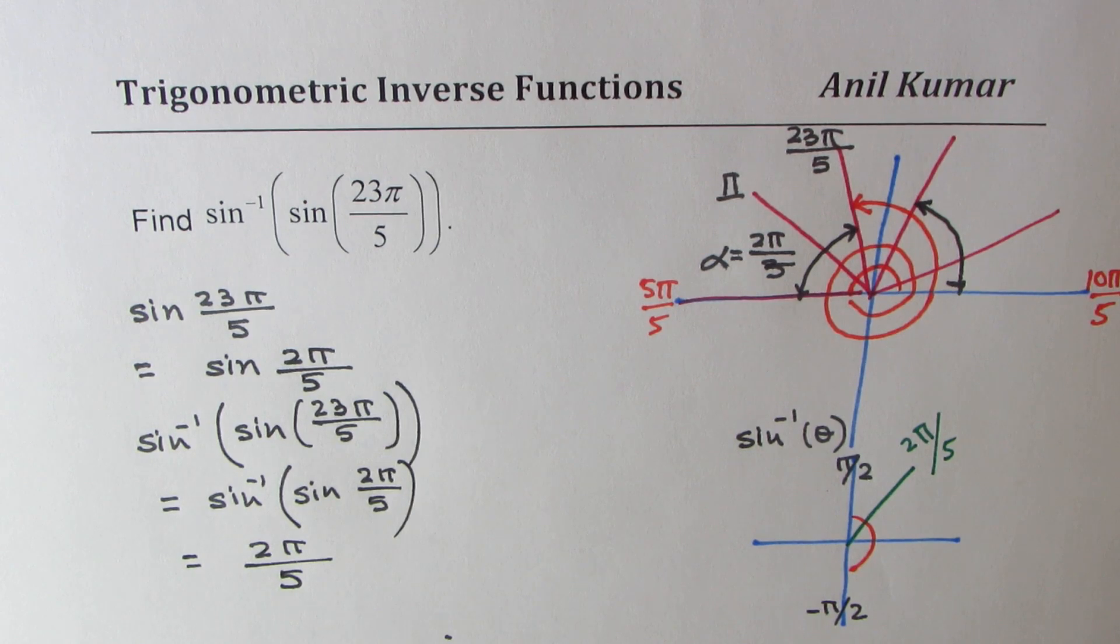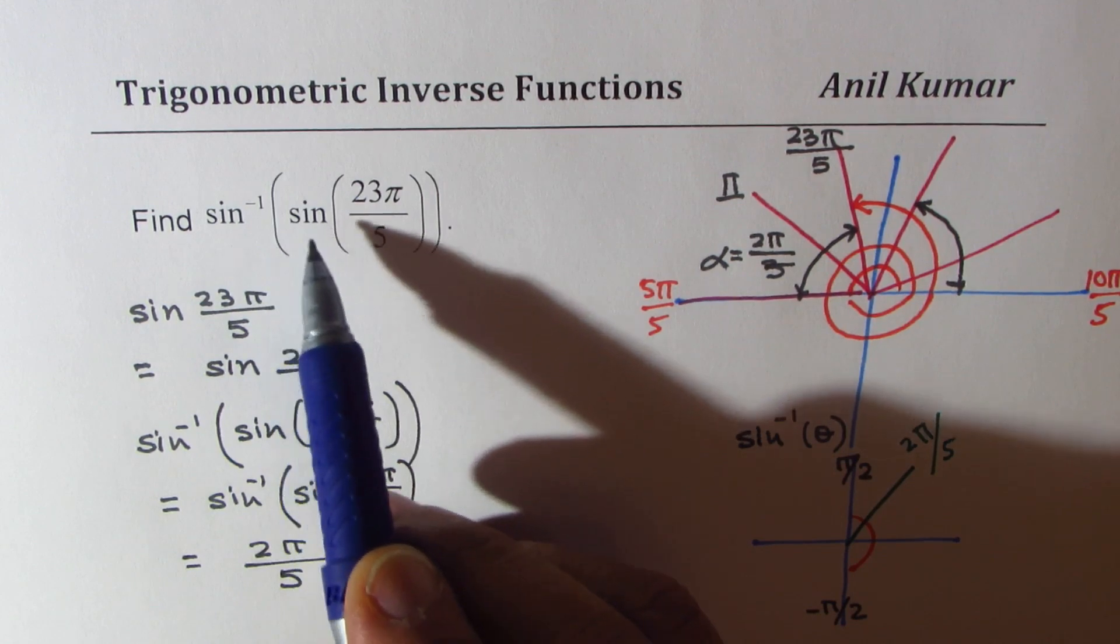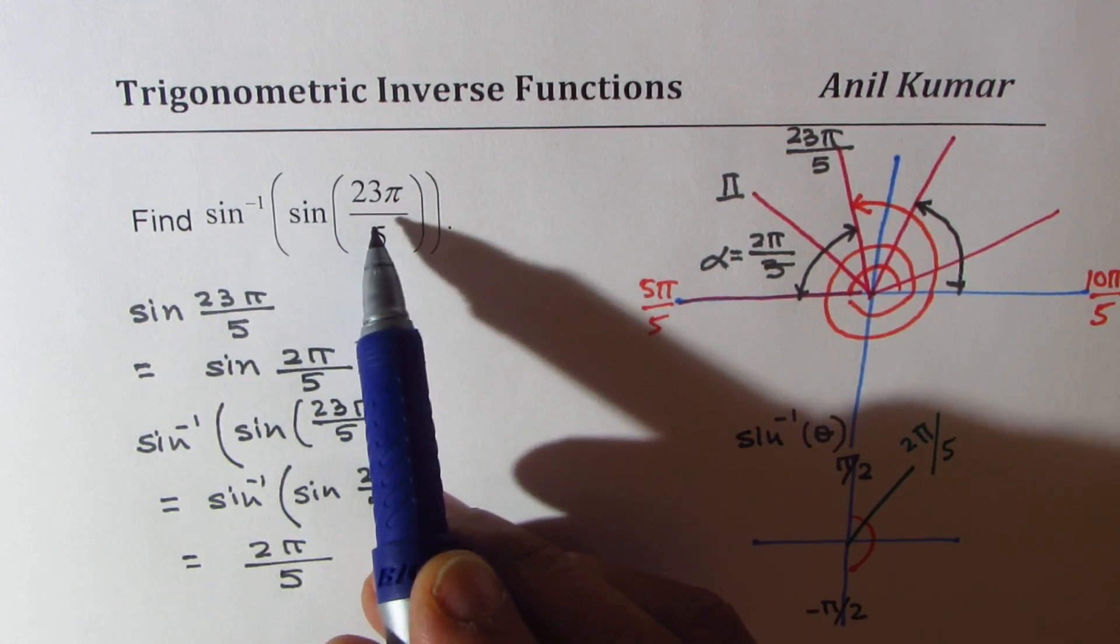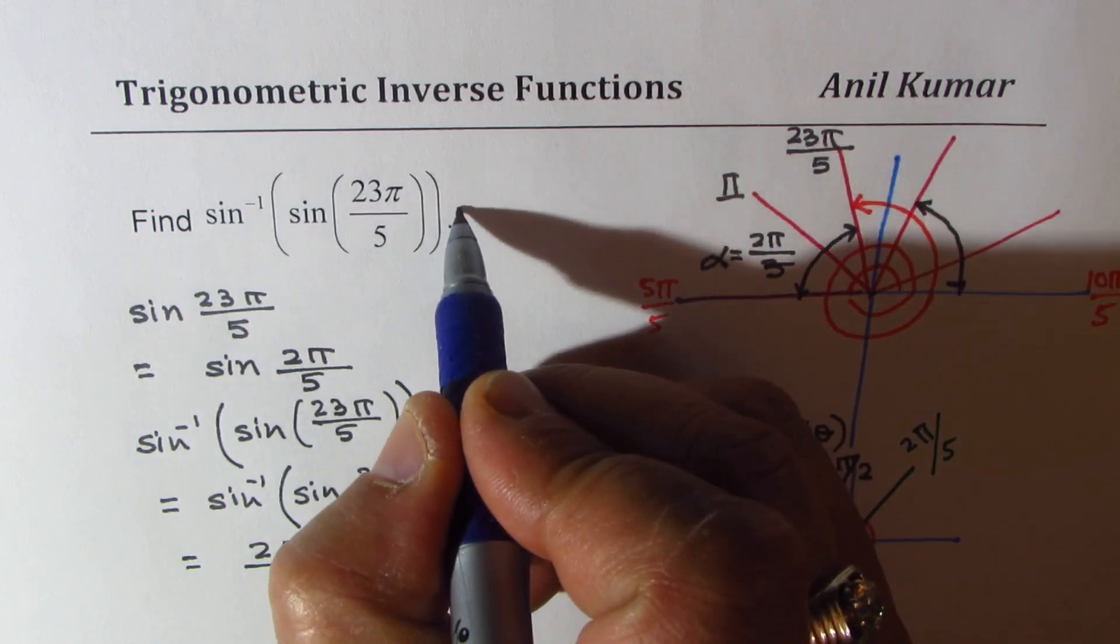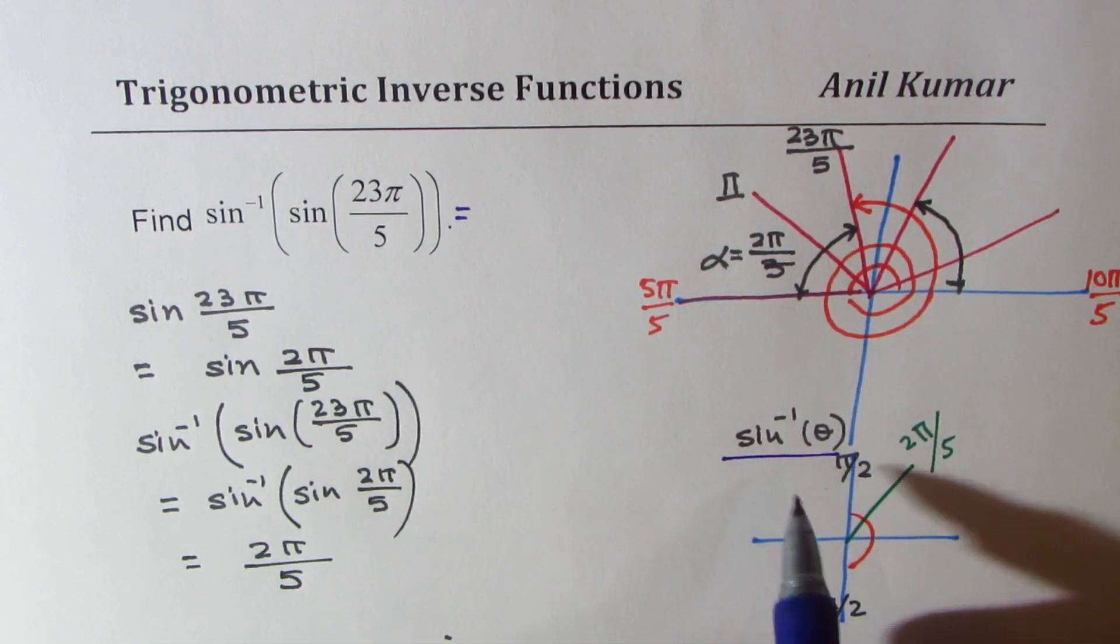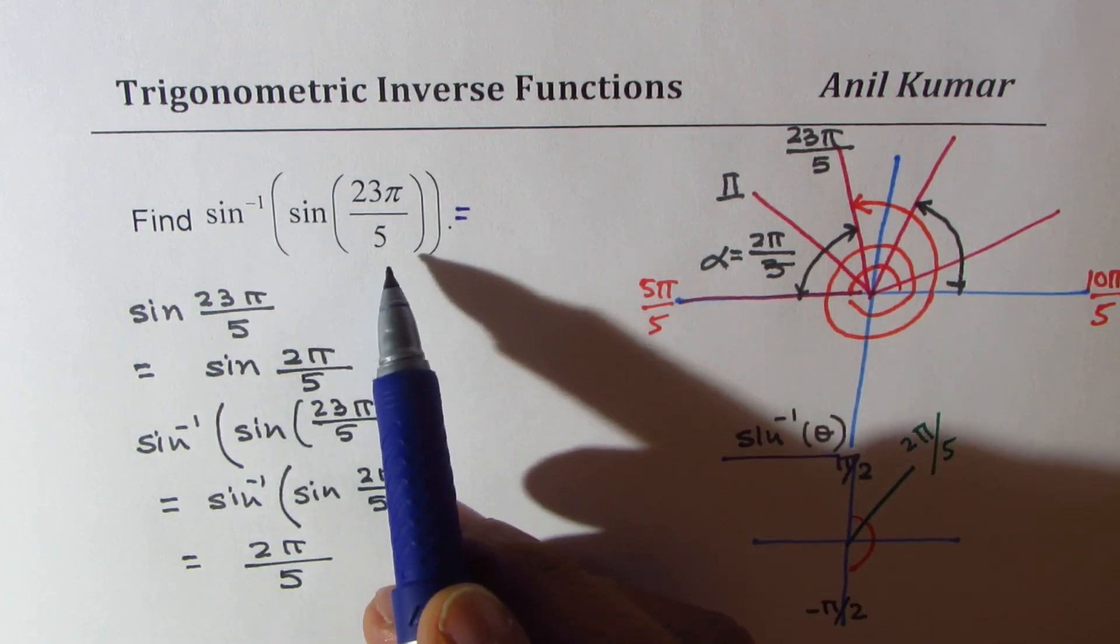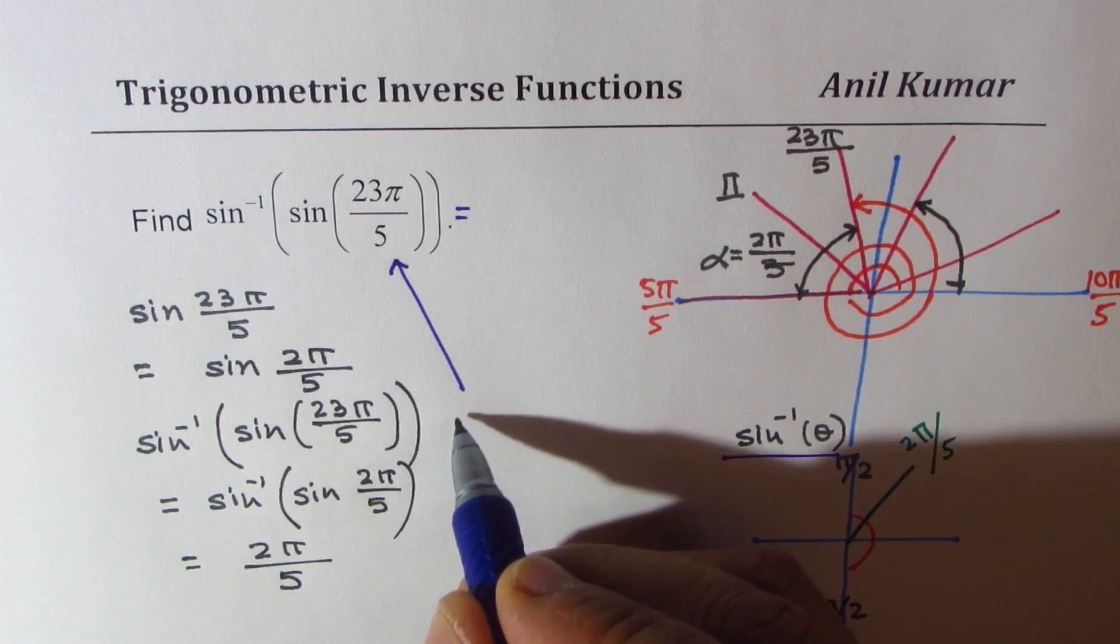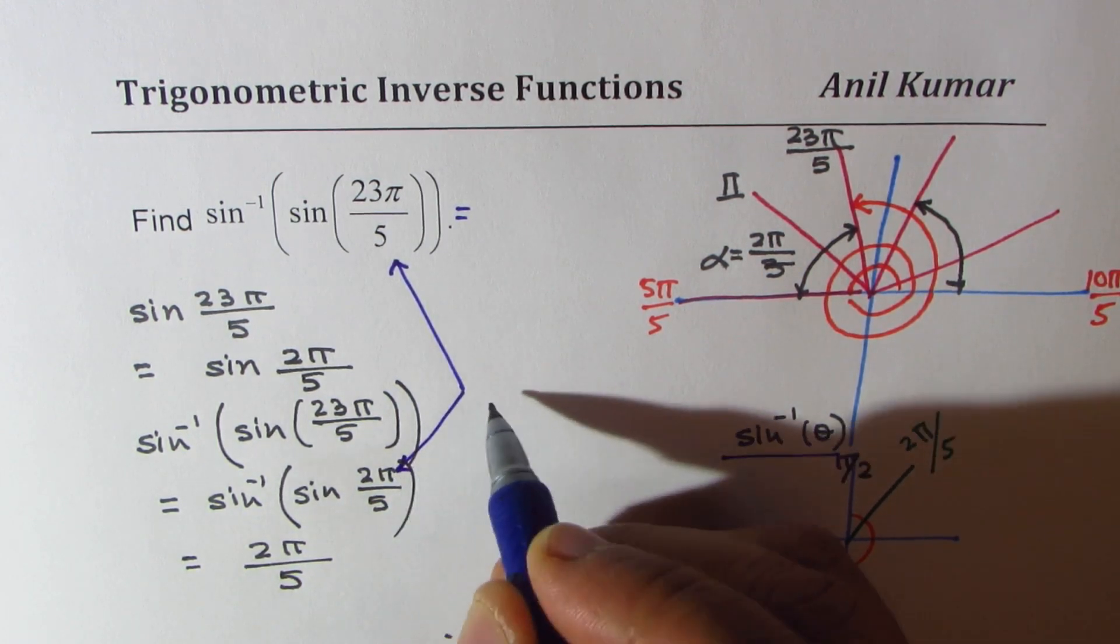Do you get the idea? So that is how you could easily solve this particular question. So I hope you understand the concept. So for a question, sine inverse of sine something, we may not get the same result as argument as shown here, since it is not in the domain of inverse function. So you may have to find equivalent ratio here. So what we did here was, we wrote an equivalent ratio.